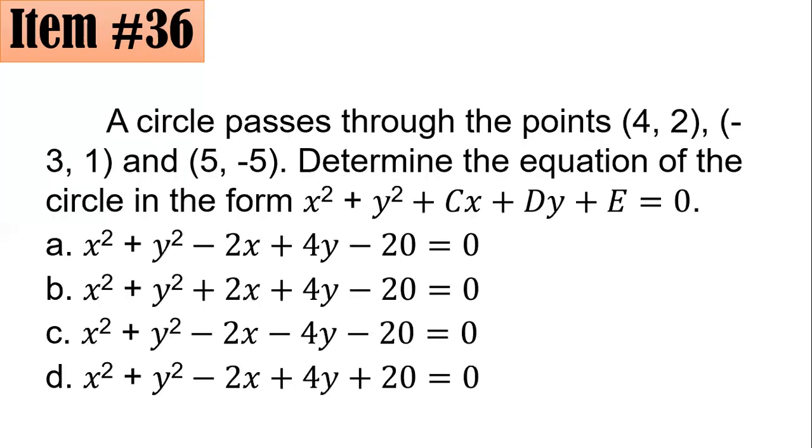Item 36. A circle passes through the points (4, 2), (-3, 1), and (5, -5). Determine the equation of the circle in the form x² + y² + cx + dy + e = 0. Do you agree with A, B, C, or D?